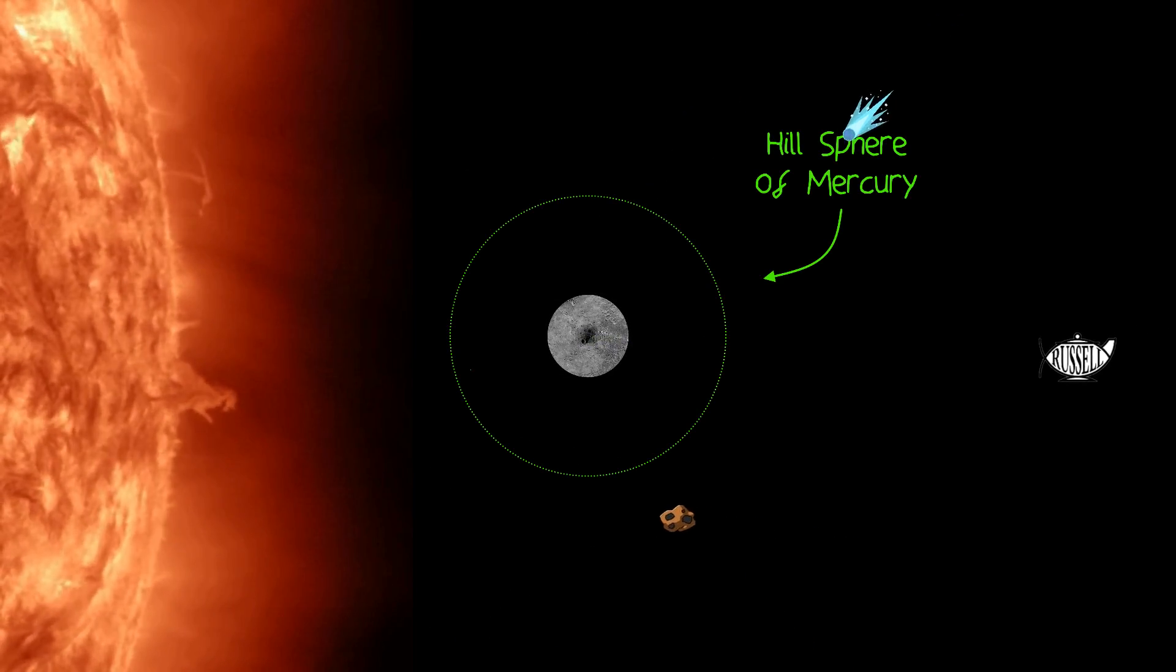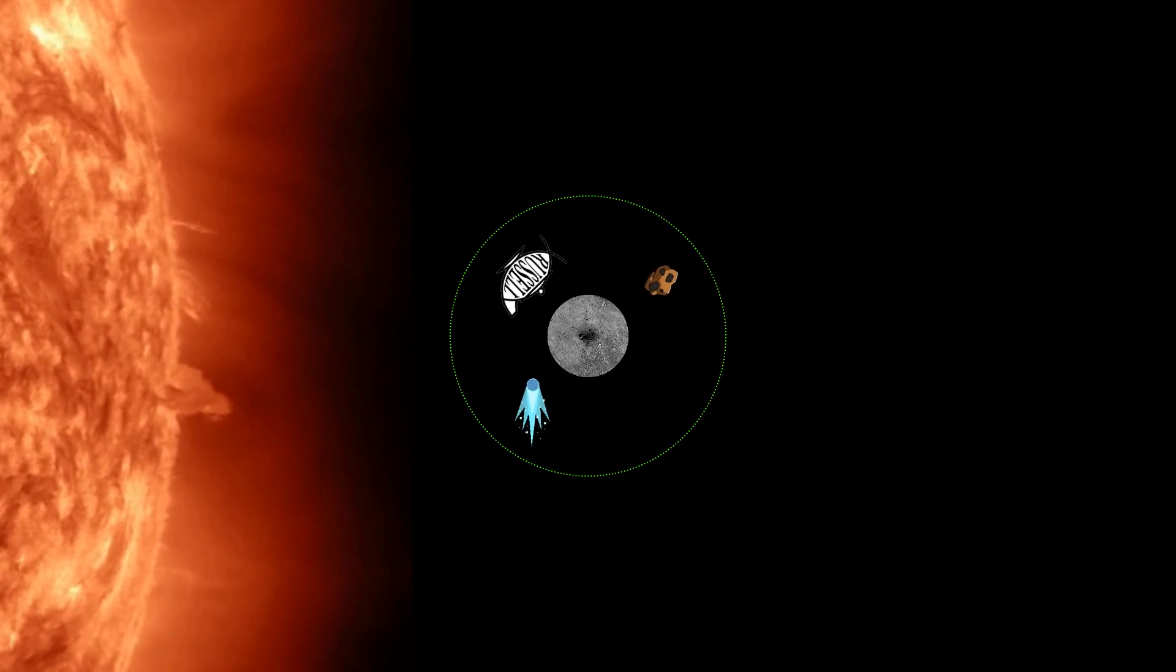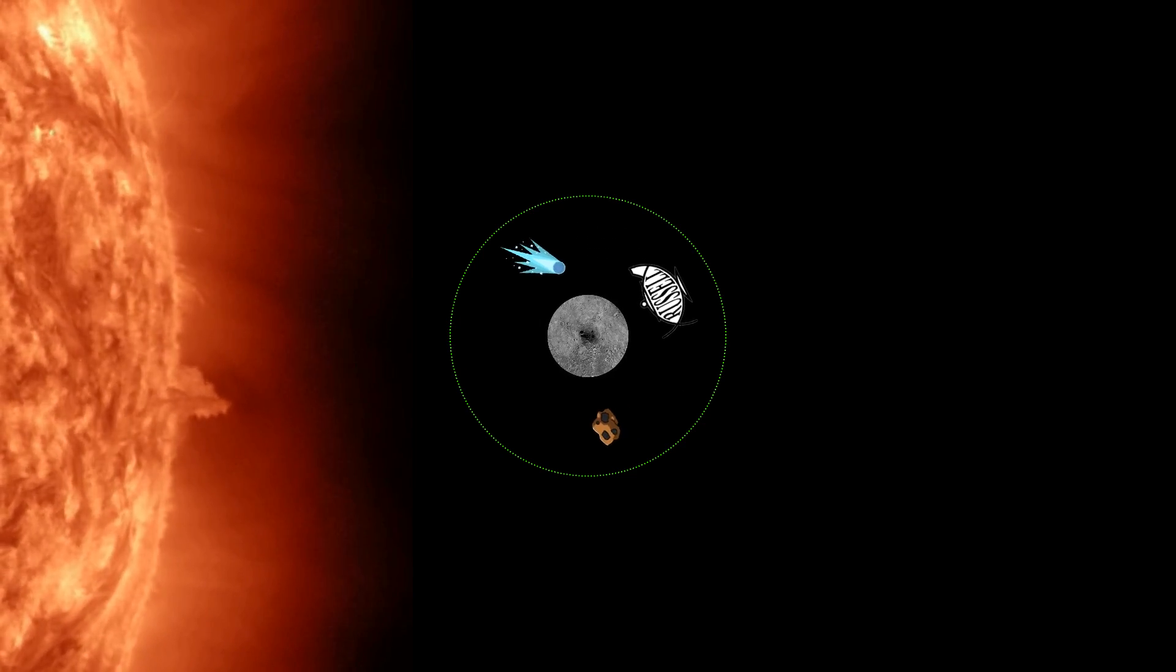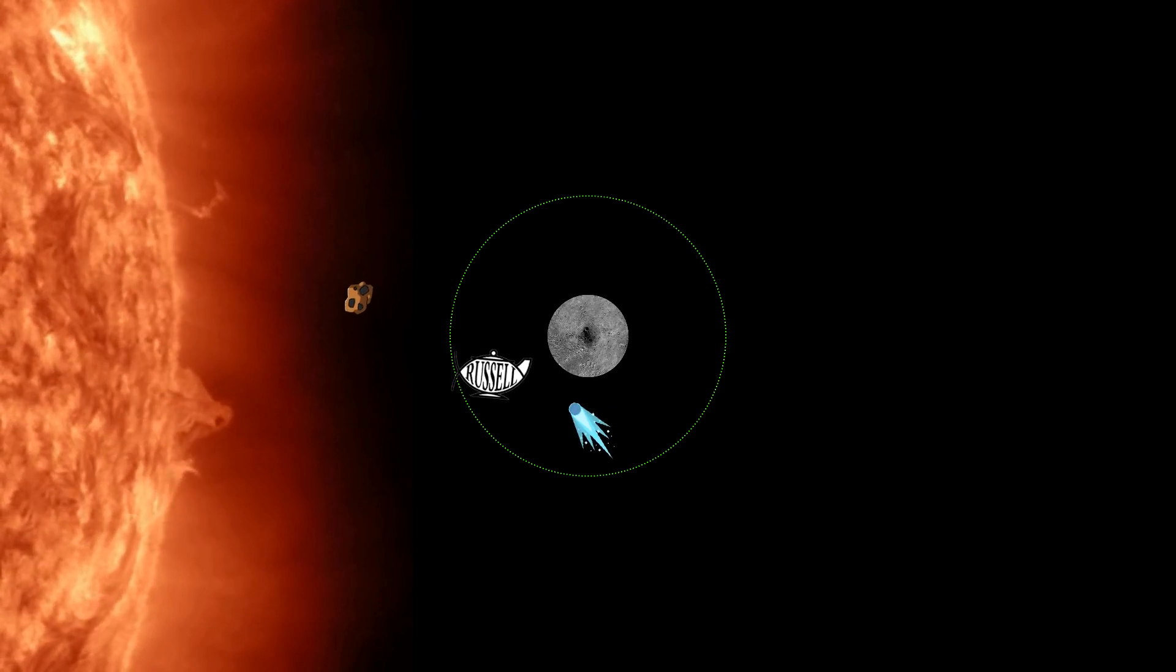If an asteroid, comet, kettle, whatever, just so happened to enter Mercury's Hill sphere, they may stick around for a bit, but sooner or later, the sun would pull them away from Mercury and place them into a separate, irregular orbit around itself.